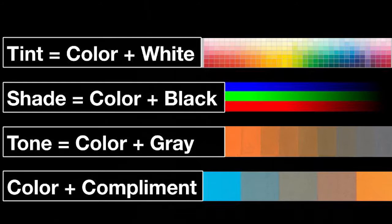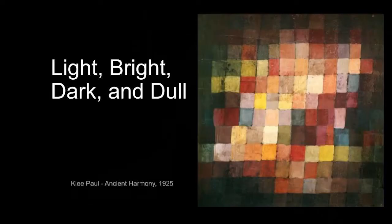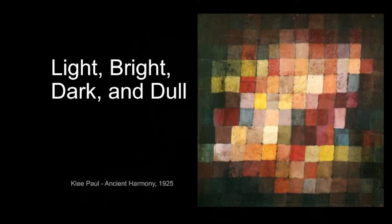And of course we have the properties of color: hue — that's the name of the color; value — which is the lightness or darkness of the color; and saturation — which is the brightness or dullness of a color. When we look at red, you can see the broad range of things that fall into the hue of red; there are tons of different reds out there.